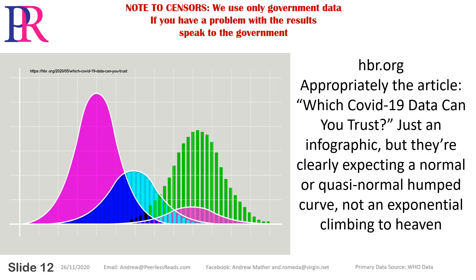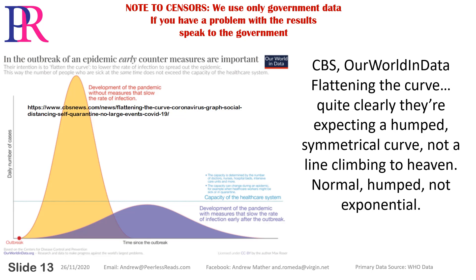HBR.org, the article 'Which COVID-19 Data Can You Trust?' — just an infographic, but they're clearly expecting a normal or quasi-normal humped curve, not an exponential climbing to heaven. CBS and Our World in Data on flattening the curve — quite clearly, they're expecting a humped, symmetrical curve, not a line climbing to heaven.